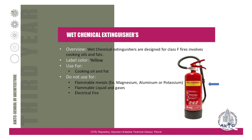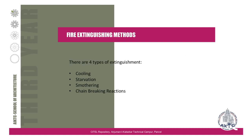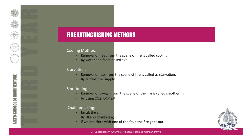These are the different types of fire extinguishers used for different classes of fire: water, foam, dry chemical powder, CO2, and wet chemical extinguishers. Now, what are the fire extinguishing methods? There are four types: cooling, starvation, smothering, and chain-breaking reaction.